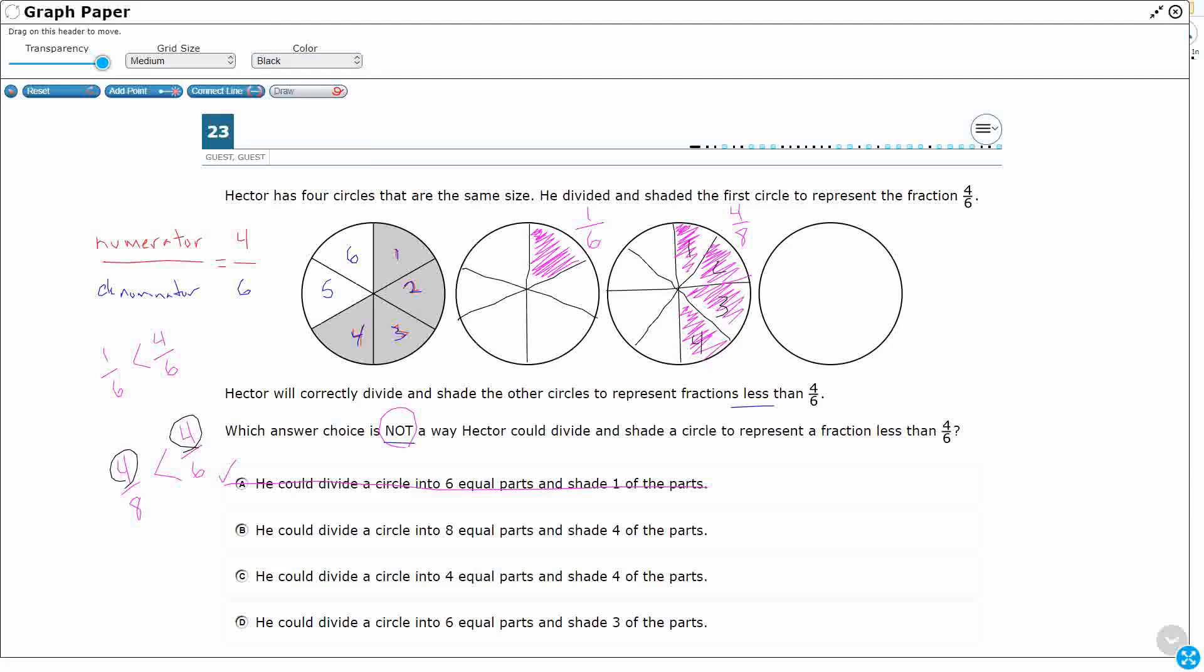But you see, when I cut my same size circle into eighths, each piece is smaller. So these are four larger pieces, and these are four smaller pieces, because the more my denominator grows, the smaller each piece gets. So this works, which means I don't want it.